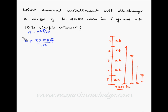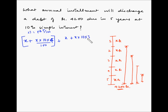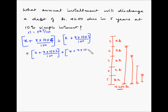So: X + (X × 10 × 4)/100, plus the second-year installment X + (X × 10 × 3)/100, plus X + (X × 10 × 2)/100, plus X + (X × 10 × 1)/100. These terms cover the first, second, third, and fourth installments. For the fifth installment we save no interest, so we simply add X. The entire expression equals 4200 rupees.